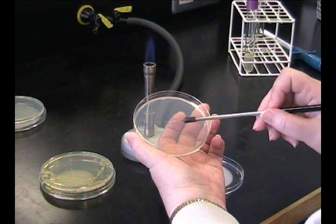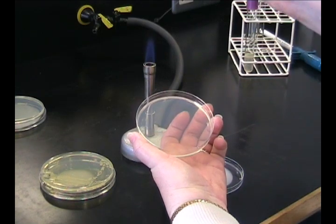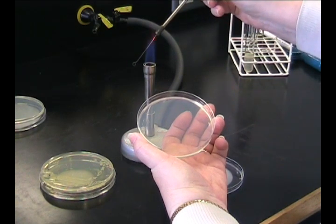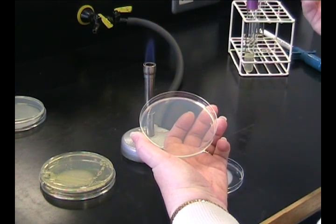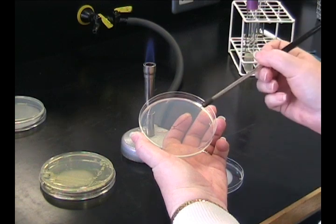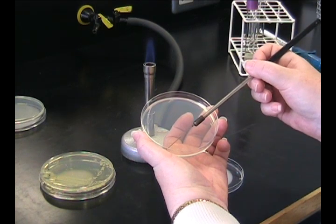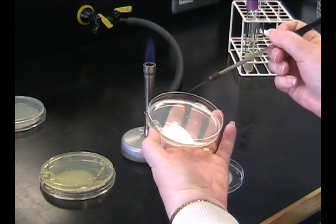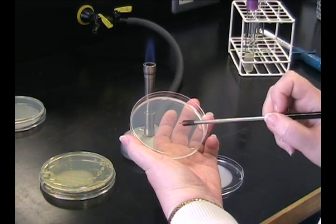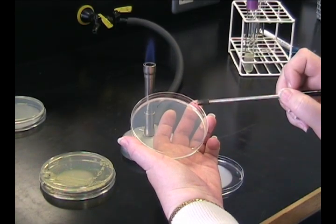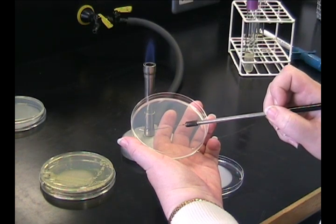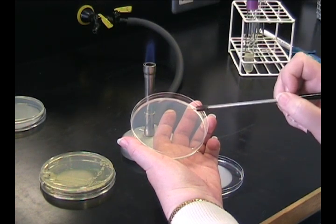It's important now to flame your loop again. Draw your loop slowly up through the flame to remove any bacteria from it. Cool your loop. If necessary, cool the loop onto the plate just to make sure it's cool. Then take one streak across the plate from this primary streak. Continue with three more streaks below it.